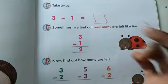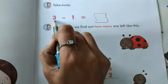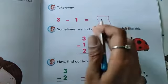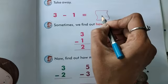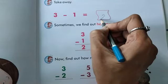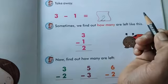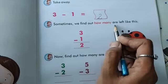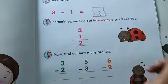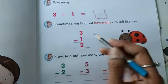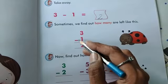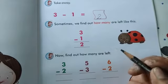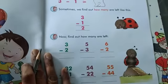Now look at here. Sometimes we find out how many are left like this. 3 minus 1 equal to which answer became here? Answer became 2. Next,